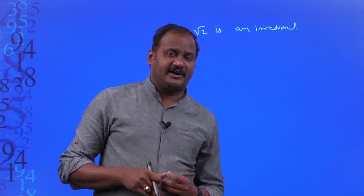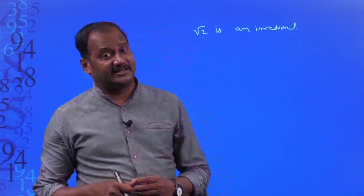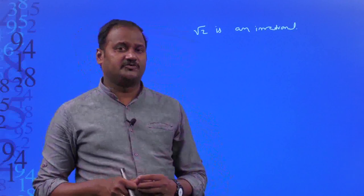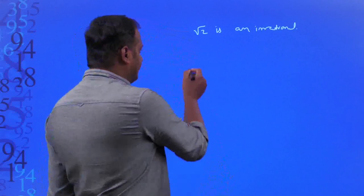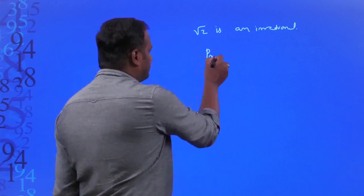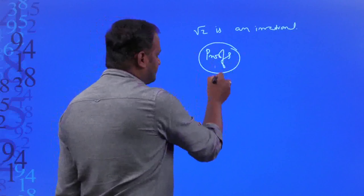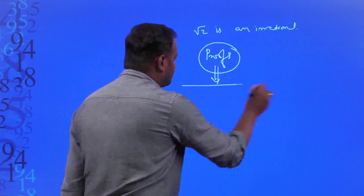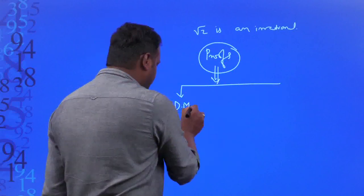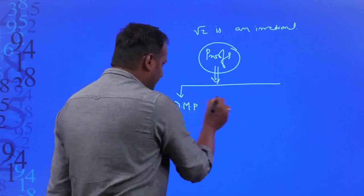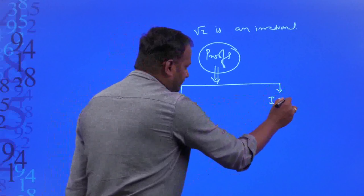In order to prove the statement that √2 is an irrational number, in mathematics we have two kinds of proofs to prove any mathematical statement. Those two proofs are: one is the direct method of proof, and the second one is the indirect method of proof.